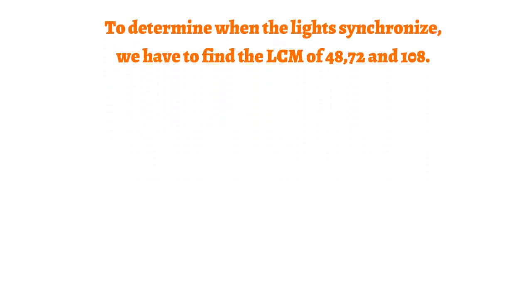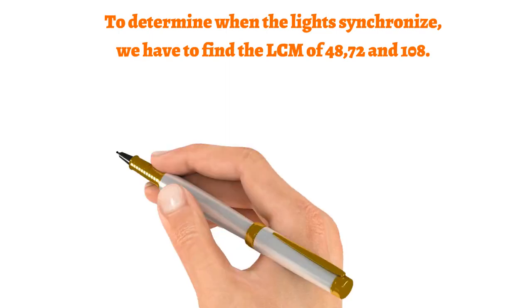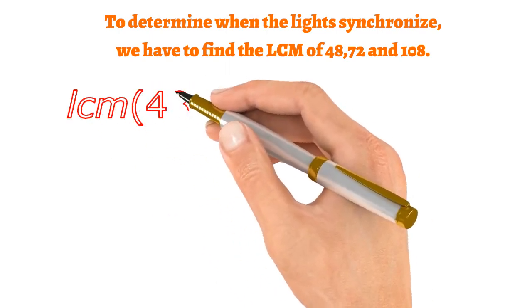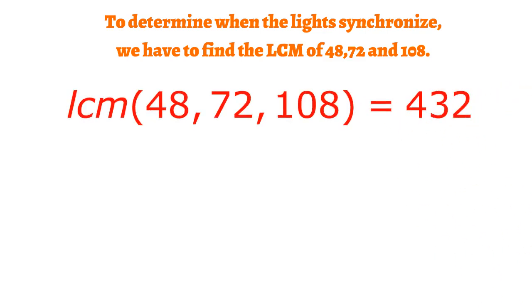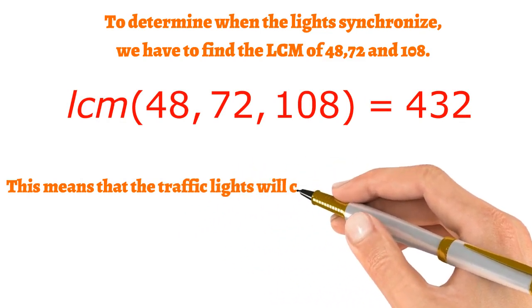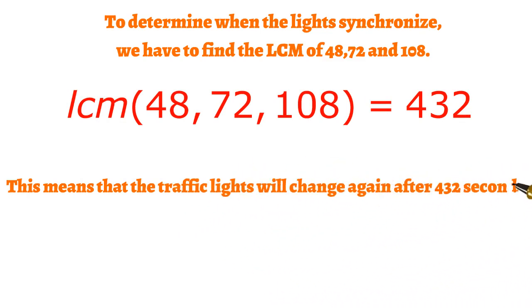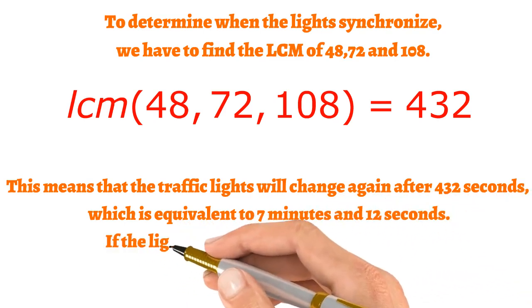To determine when the lights synchronize, we have to find the LCM of 48, 72, and 108. The LCM of 48, 72, and 108 is equal to 432. This means that the traffic lights will change again after 432 seconds, which is equivalent to 7 minutes and 12 seconds.